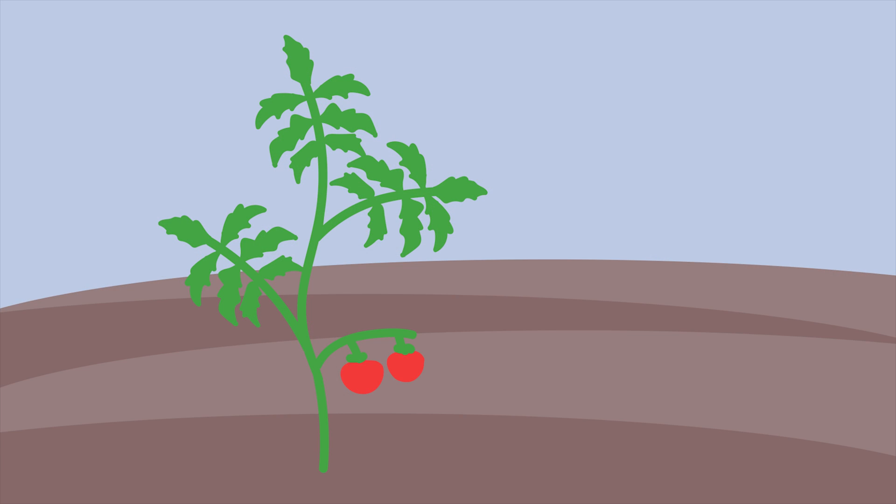In plant genetics, it is important to understand how genes control the expression of different traits. For example, what gene makes a beefsteak tomato so large while a cherry tomato is so small?